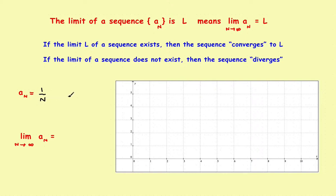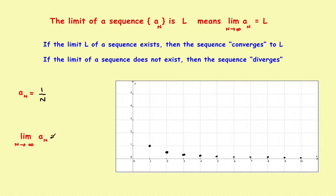In the first example, let's start with one of the most basic ones. Suppose the sequence is defined to be 1 over N. If N equals 1, you have 1 over 1, so a point at 1. When N equals 2, you have 1/2. Then 1/3, 1/4, and so on. If you keep going, these points will get closer and closer to the x-axis.